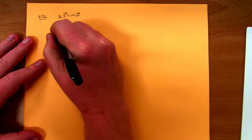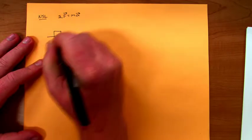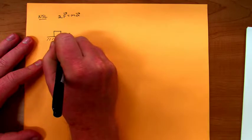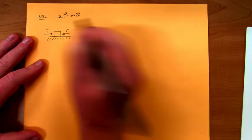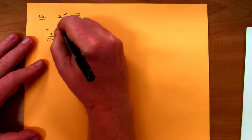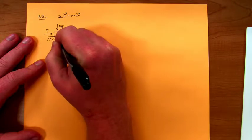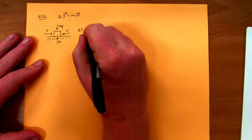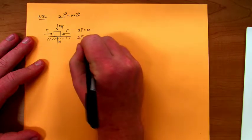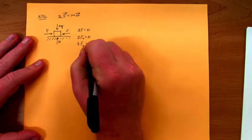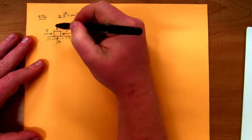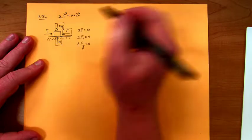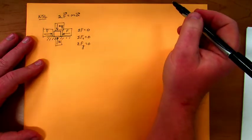Previously, we might have had an object sitting on a frictionless surface with multiple forces acting on it — maybe a force F pushing from one side, another force F pushing from the other side, the Earth pulling down, and the surface pushing up. Since the object is at rest or moving at constant speed, the sum of the forces must be zero in both the x and y dimensions, meaning the upward and downward forces are equal, and the left and right forces are equal.